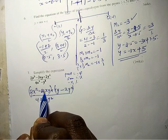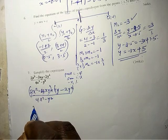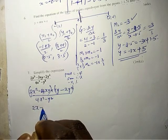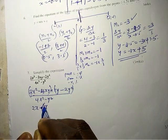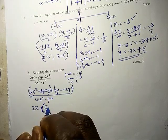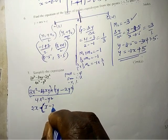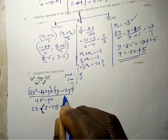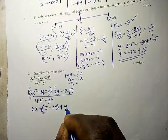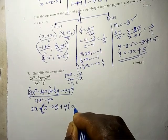...common factor is 2x. So 2x into (x - 2y) plus the common factor is y, so y into (x - 2y).